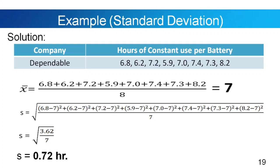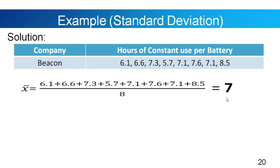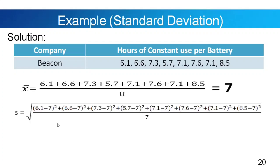Now for Beacon Company: 6.1, 6.6, 7.3, 5.7, 7.1, 7.6, 7.1, 8.5. The mean is also equal to 7. Using the same formula, we have the square root of the summation of squared deviations divided by 7. That equals the square root of 5.38 divided by 7. The standard deviation of Beacon Company is 0.88 hours.